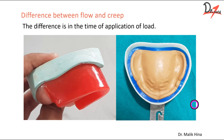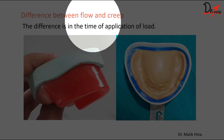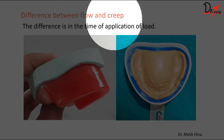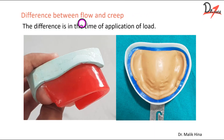Now, what is the difference between flow and creep? The difference is in the time of application of load. We use the term flow to describe the rheological properties of amorphous materials like waxes. But creep is used for metals, not for flowable things. Also, another difference is the time of application of load: in flow, it happens early in the lifetime of the material. But in creep, we allow the metal to mature and completely harden, and then we apply a constant force or load.